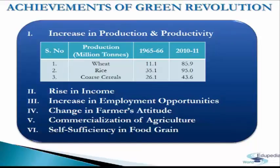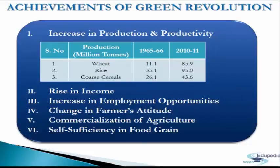A significant increase in output due to higher productivity and production, combined with minimum support price, resulted in generating marketable surplus in agriculture — that is, more revenue for farmers led to an increase in their disposable income. Consequently, it motivated farmers to shift to commercial farming in lieu of subsistence farming. Due to significant increase in production and productivity, India started maintaining buffer stocks of food grains for emergency circumstances, achieving growth with self-sufficiency — a remarkable achievement.